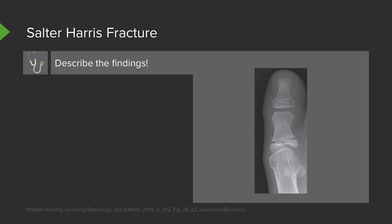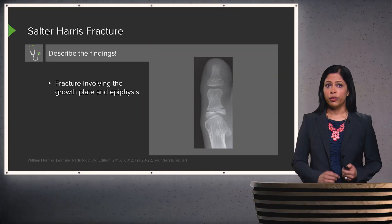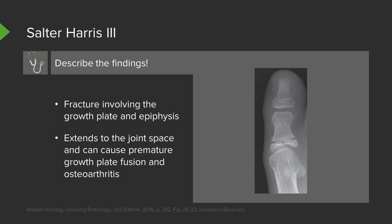This is another x-ray of the first digit in a skeletally immature patient. You can see the open growth plate here, and the arrow points to the fracture, which involves the epiphysis. This is an example of a fracture involving both the growth plate and the epiphysis — a type III Salter-Harris fracture. This does extend to the joint space because it involves the epiphysis, which extends to the joint space. This can cause premature growth plate fusion and osteoarthritis, and would need close intervention.